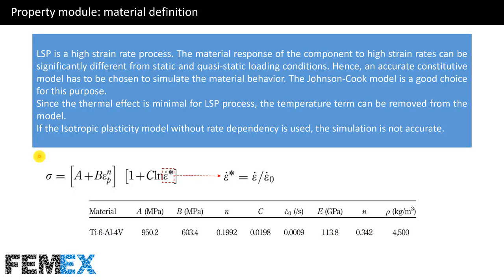Laser shot peening is a high strain rate process. The material response to high strain rates can be significantly different from static and quasi-static loading conditions. Hence, an accurate constitutive model has to be chosen to simulate the material behavior. The Johnson Cook model is a good choice for this purpose. Since the thermal effect is minimal for the laser shot peening process, the temperature term can be removed from the model. If the isotropic plasticity model without rate dependency is used, the simulation is not accurate.